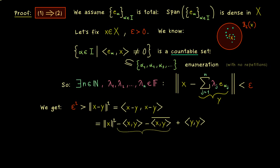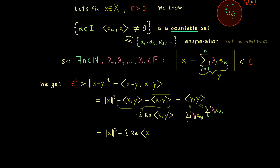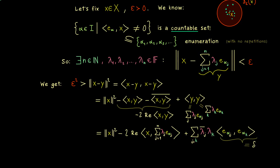The two middle parts can be written as minus two times the real part of the inner product of x with y. In the last term we put in the formula for the linear combination, writing the first sum with index j and the second with index k. Using linearity in the second argument to pull out sums and scalars, the equation simplifies. In the third term we have a double sum with indices j and k, where the first scalar has a complex conjugation. What remains in the inner product is just the ONS, so we can use the Kronecker delta and the double sum collapses to a single sum.